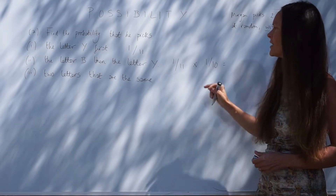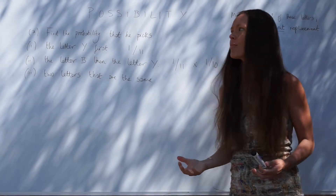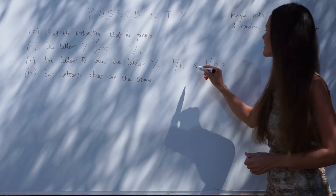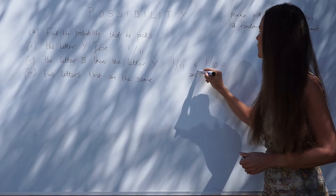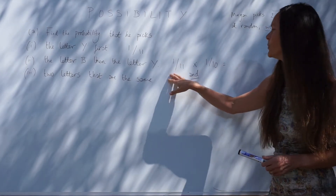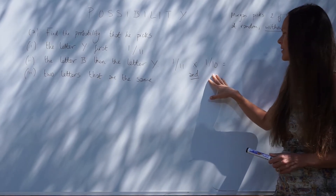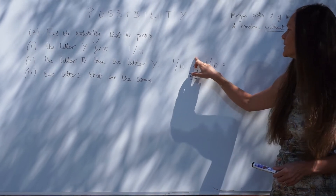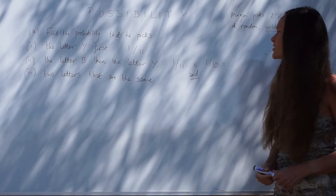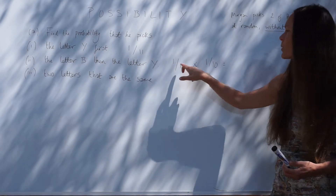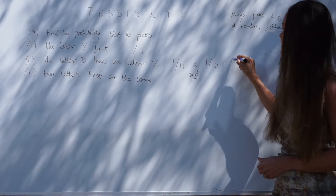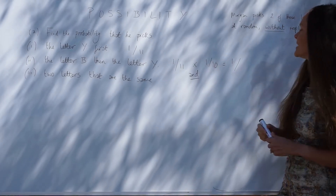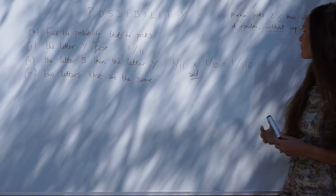What you need to do with these probabilities is multiply them together, so it becomes one eleventh multiplied by one tenth. A good way to remember the multiplication sign is by thinking of the word 'and' — we're taking the letter B and then the letter Y. When multiplying fractions, multiply the numerators together: 1 times 1 is 1, and multiply the denominators: 11 multiplied by 10 is 110. We can't simplify that fraction, so the final answer is 1/110.